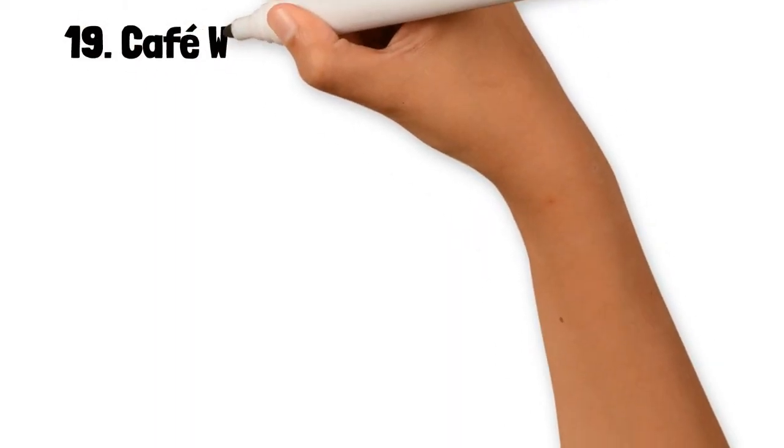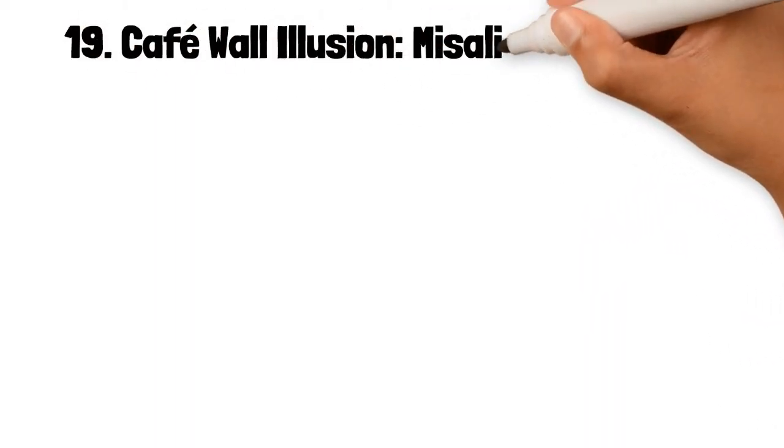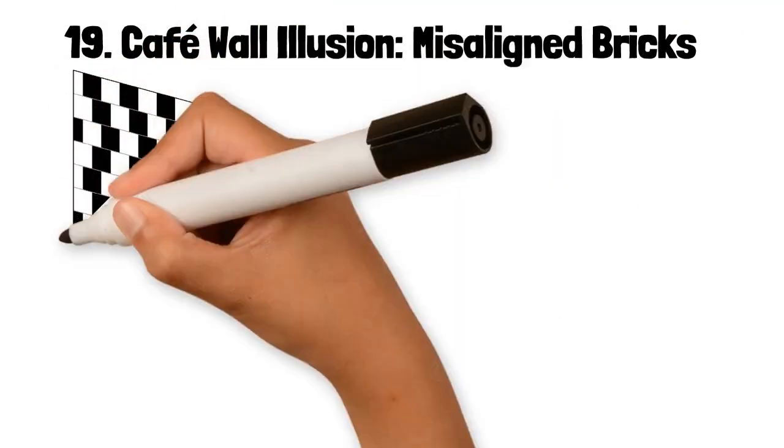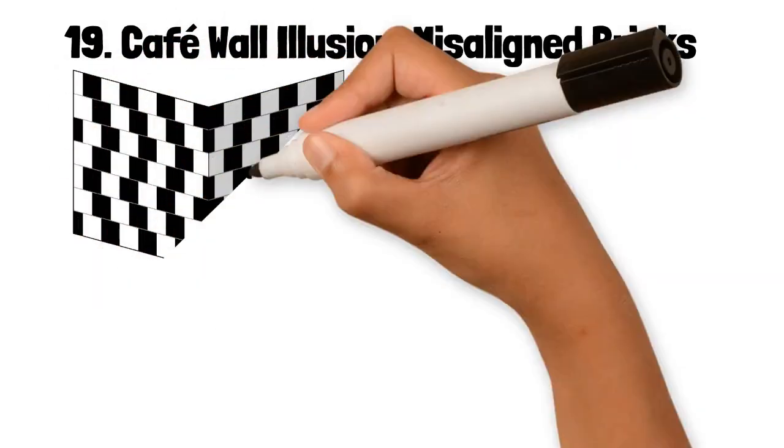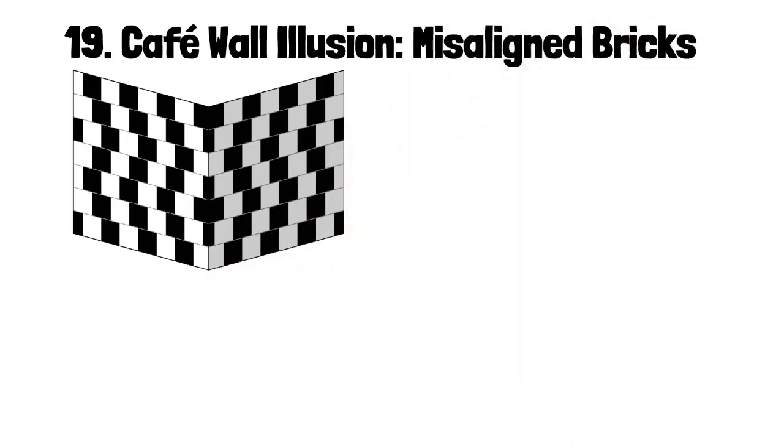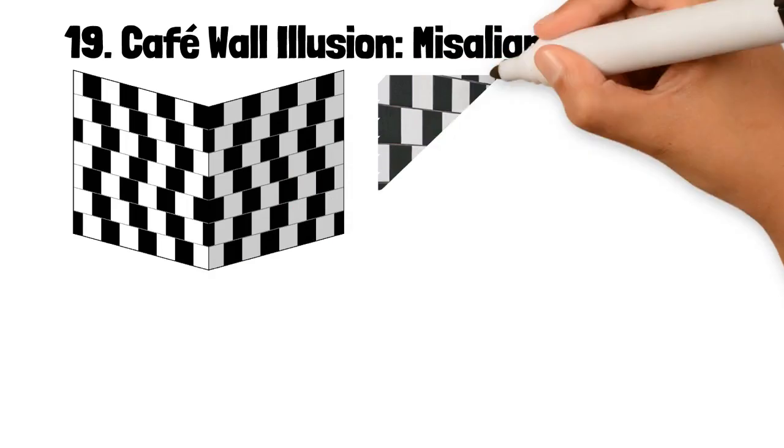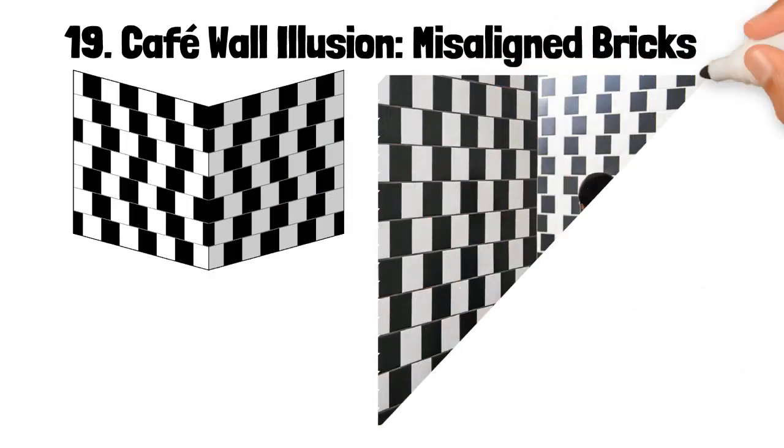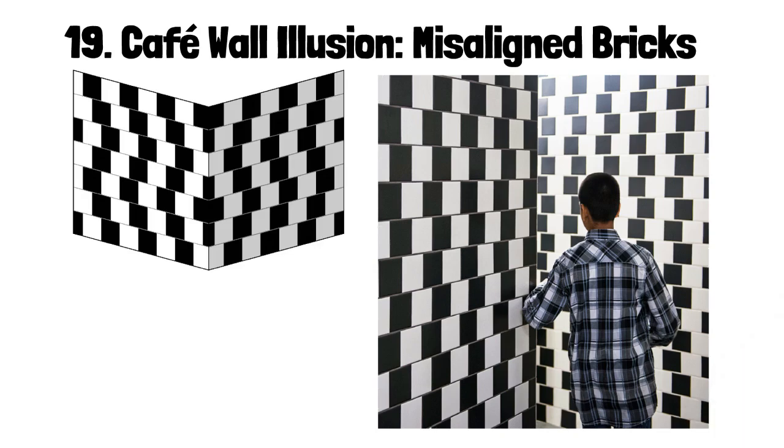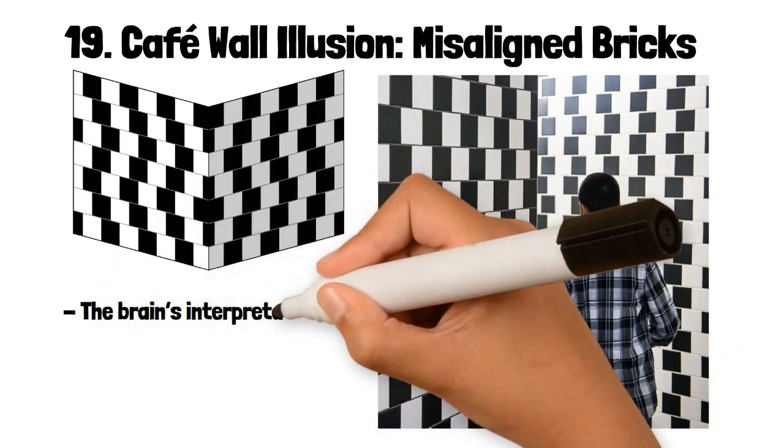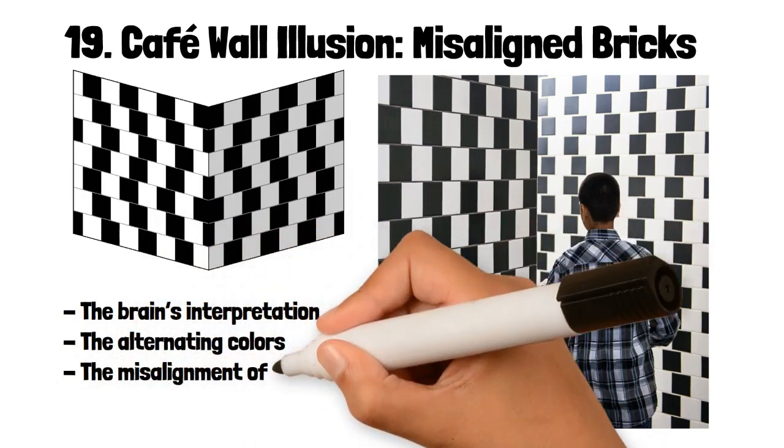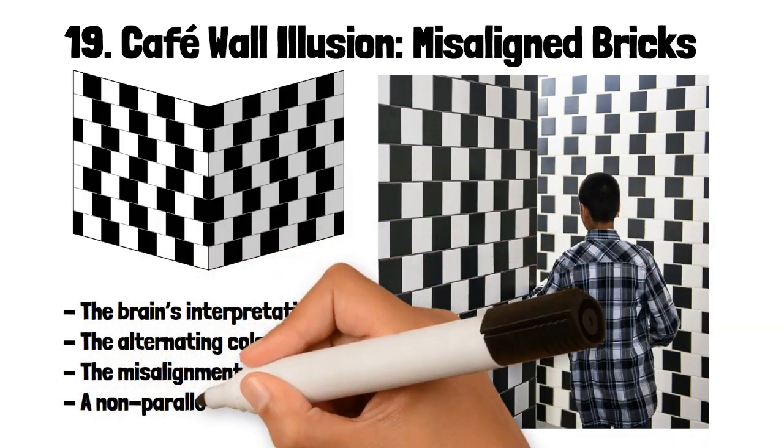19. Café Wall Illusion: Misaligned Bricks. The café wall illusion is a visual illusion where parallel horizontal lines between staggered rows of black and white tiles appear to be slanted or curved. This illusion is named after a café in Bristol, England where the effect was first noticed on a tiled wall. The illusion is caused by the brain's interpretation of the alternating colors and the misalignment of the tiles which creates the appearance of a non-parallel arrangement.